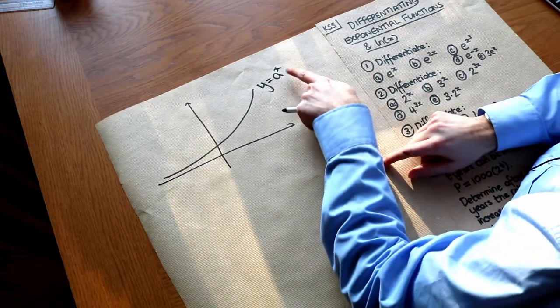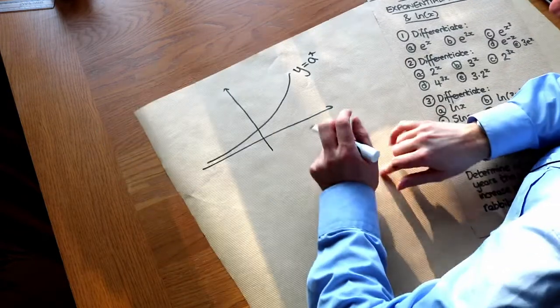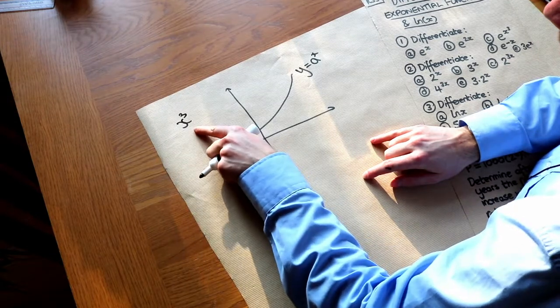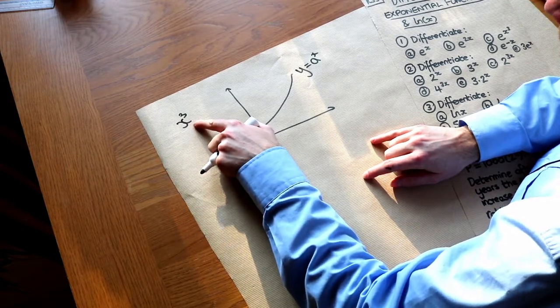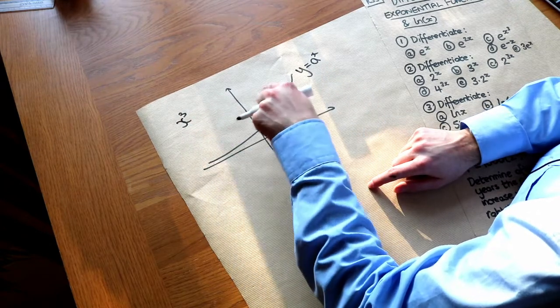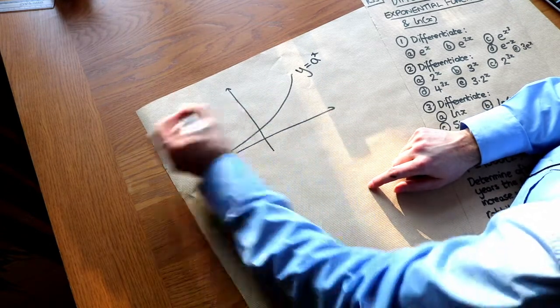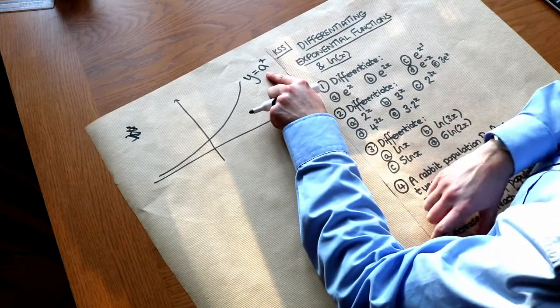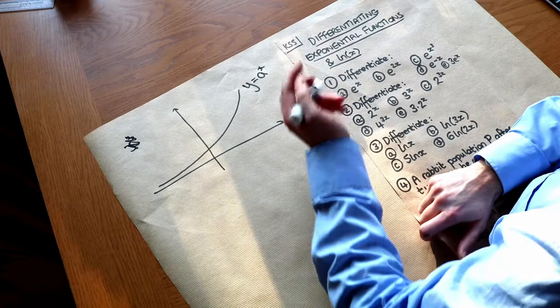So here the variable's in the power, and compare that to say a polynomial term if I had x cubed, that's known as a polynomial term and there the variable is in the base and the constant's in the power. So you can see that's quite different to say 3 to the x where it is in them. And we're going to be differentiating things like this as well as log graphs like ln of x.